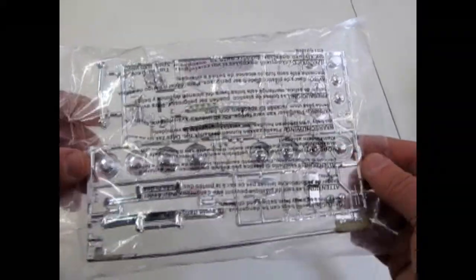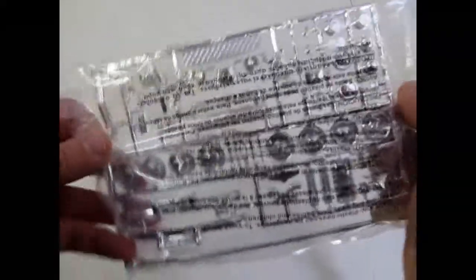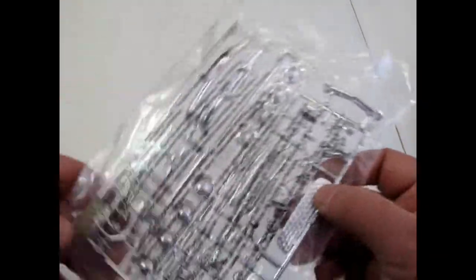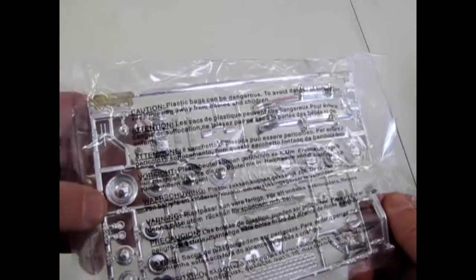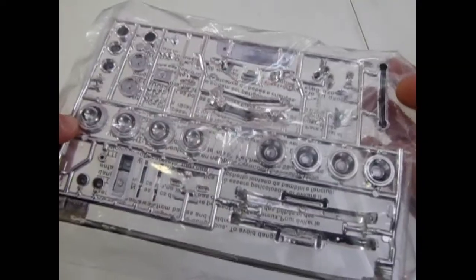Our chrome pieces which I'm going to keep in the bag just to protect the chrome. But you can see the nice detail. The big old bumpers, baby moon hubcaps, all kinds of other goodies.